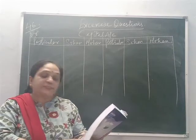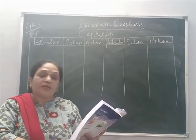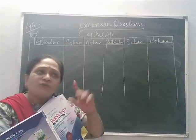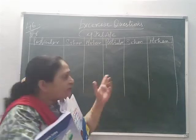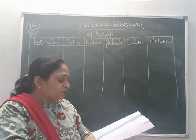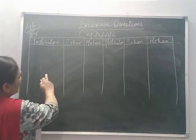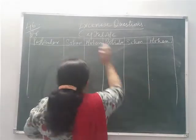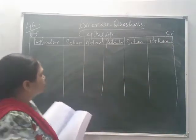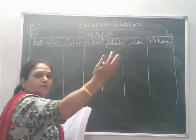In question number 46, prepare capital accounts of the partners Sohan and Mohan with the following information. Since the capitals are fluctuating, capital accounts are prepared directly. Under the fixed method, you prepare capital account as well as current account, but here you are only asked to prepare the capital account. All details are provided — just place the figures. I have prepared capital accounts with Particulars, Sohan, Mohan on both debit and credit sides. If there were 3 partners, all three would be placed together.